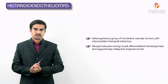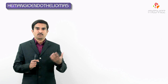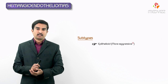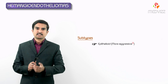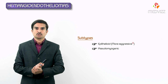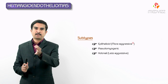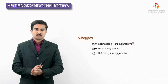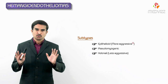There are three important subtypes identified in hemangioendothelioma. The first is epithelioid hemangioendothelioma, which is more aggressive. The second is pseudomyogenic, which falls between aggressive and less aggressive — it has an intermediate behavior within the category. The third is the hobnail pattern, which is less aggressive. Epithelioid is more aggressive and hobnail is less aggressive — these are two important MCQ points to know about hemangioendothelioma.